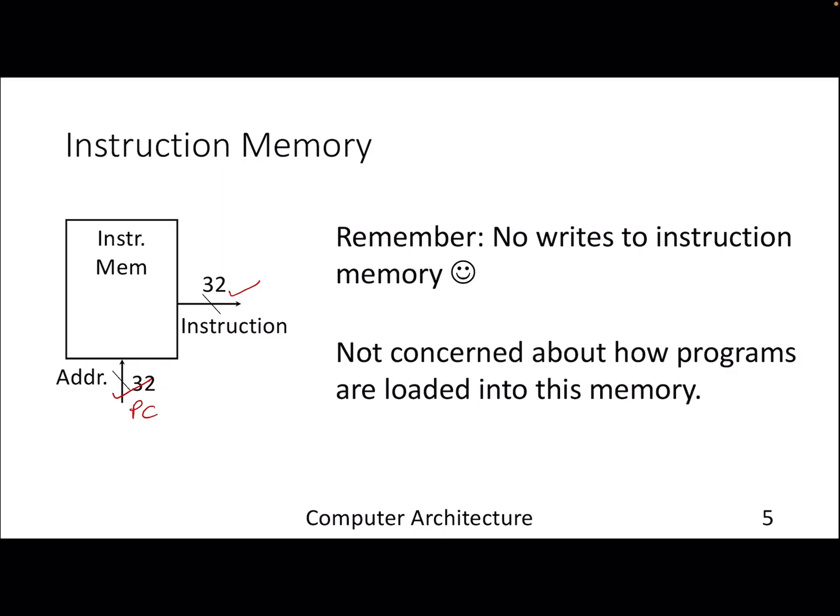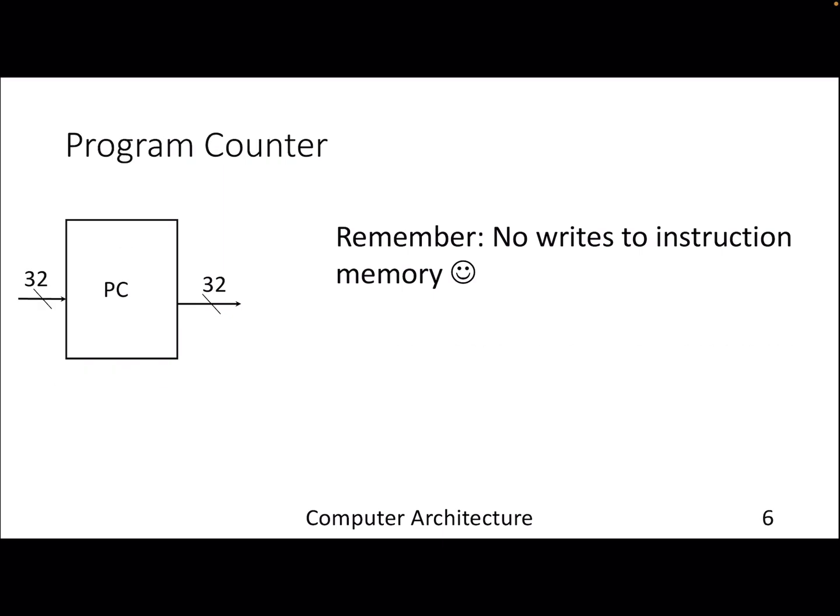At this moment, don't be concerned about how programs are loaded into memory — your OS course is the right place for that. For the next few lectures, we'll assume the program is already loaded into memory. The next data path element is the program counter — a simple data path element where you take a PC value and get an updated PC, typically PC plus four.